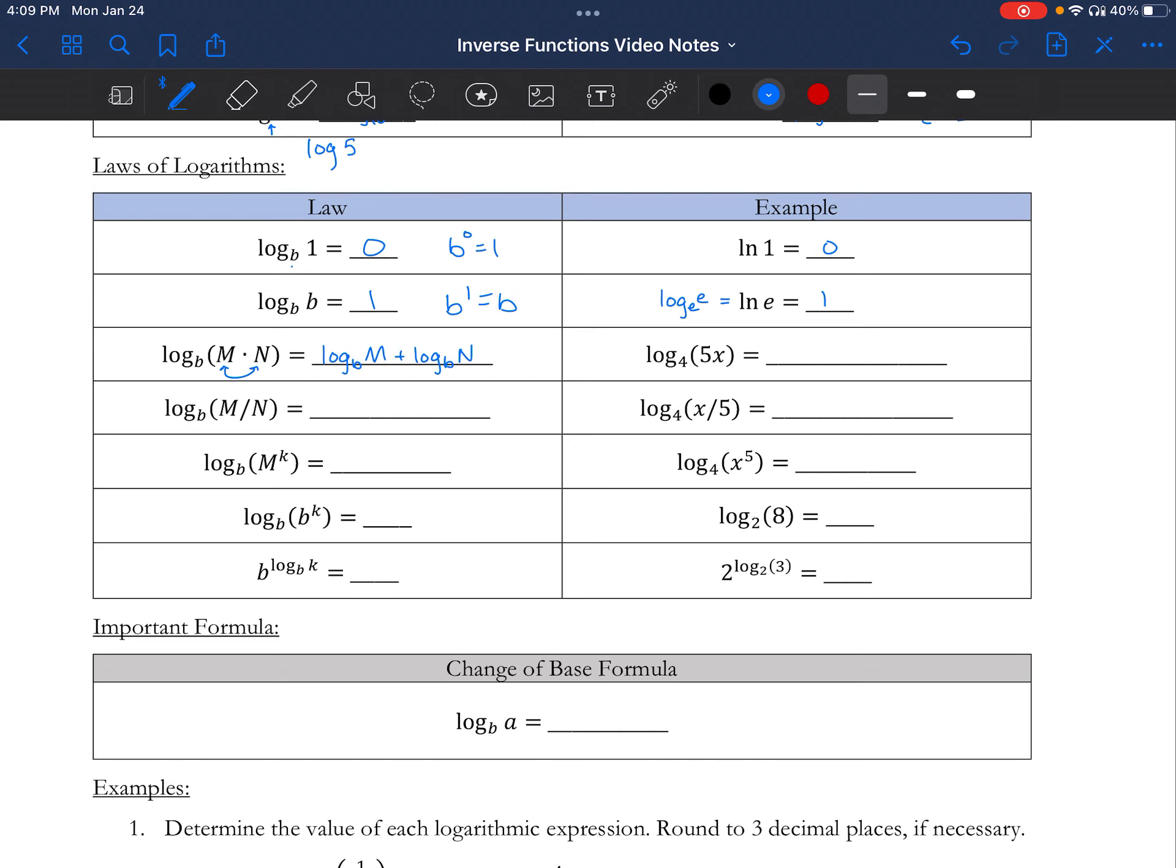For example, if I have log base 4 of 5 times x, I can rewrite it as log base 4 of 5 plus log base 4 of x. Same idea if I'm dividing. The only difference is, like with multiplication here, we turn it into addition. If I have division here, it should be subtraction. They are inverse operations of each other. So if I have log base 4 of x divided by 5, I can write this as log base 4 of x minus log base 4 of 5. Please note, because it is a common mistake, that if someone sees log base 4 of 5 times log base 4 of x, this is not the same thing. These are not equal to log base 4 of 5x or anything at all. There is no shortcut for that one.